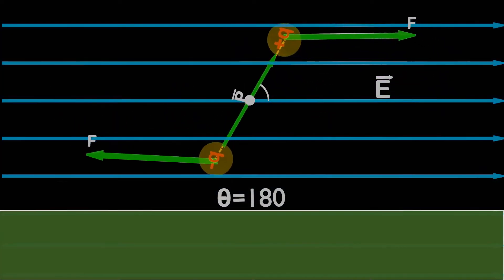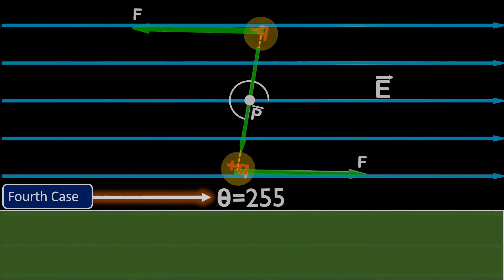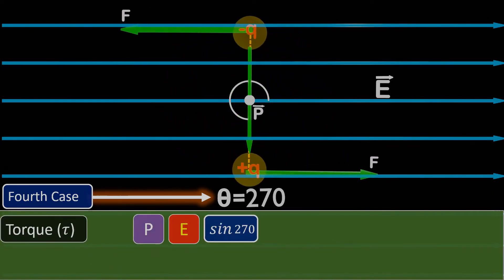Lastly, let's consider the fourth case, where the dipole is placed at an angle of 270 degrees with the electric field. When we substitute theta as 270 degrees, we find that the torque becomes minus PE, where the minus sign indicates that the torque acts in the opposite direction in comparison to the last cases.